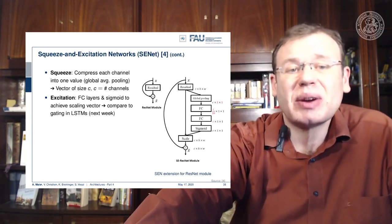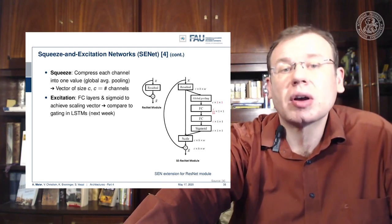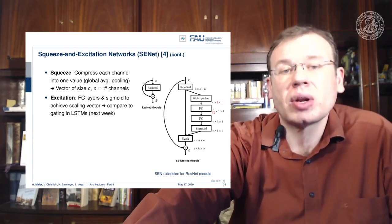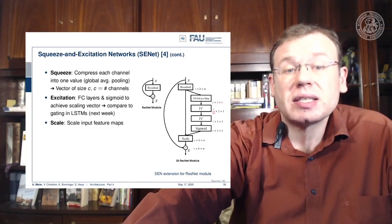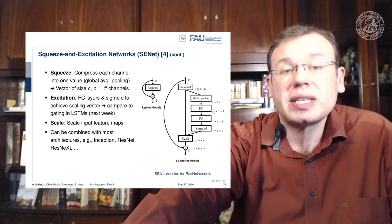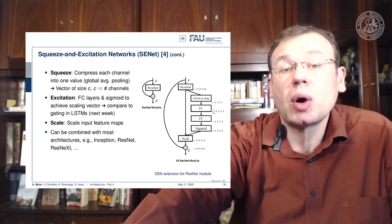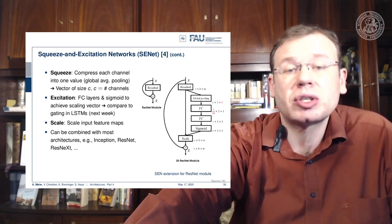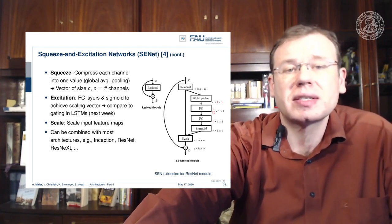This is very similar to what we do in gating in long short-term memory cells, which we'll talk about probably in one of the videos next week. These networks can be written down in five lines of pseudocode. We scale the input maps with the output, and this can be combined with most other architectures — Inception, ResNet, ResNeXt — so there are plenty of different options.